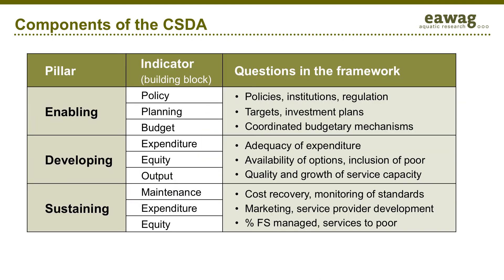On the left side of the table, you can see the three pillars of enabling, developing, and sustaining services. Each pillar is divided into three indicators, or building blocks, as shown in the second column. Each building block is scored by answering a series of objective questions. For example, in the enabling pillar, under policy, the questions address policy, institutions, and regulation.